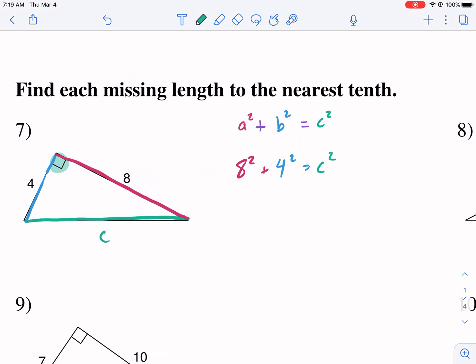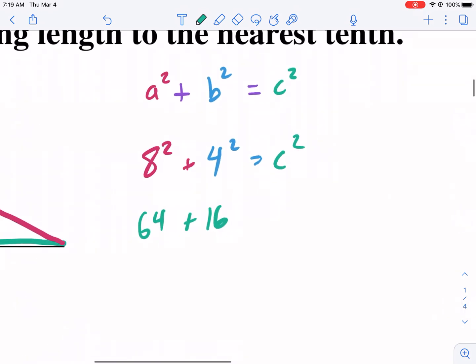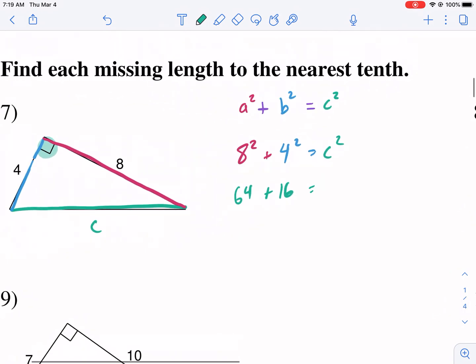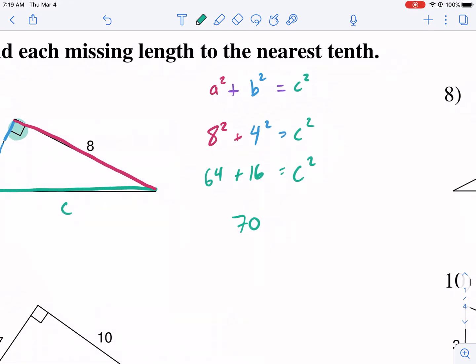So now we just solved. We have 64 plus 16. And if you need help, just, you know, use a calculator for that. 8 times 8, 8 squared. 4 times 4, 4 squared. Equals C squared. Here we get 70. So C to 4 plus 16 equals 70. That is, that's not 70. It's 80. I'm sorry. So it's 80. And now to finish it off, we have to take the square root of both sides.